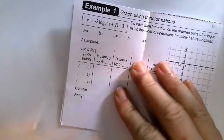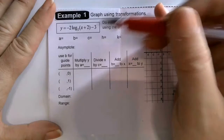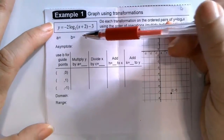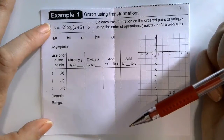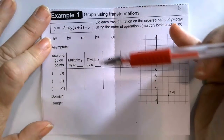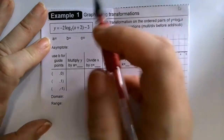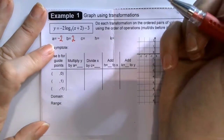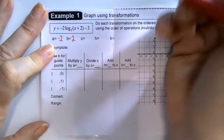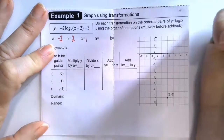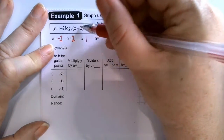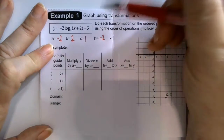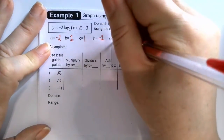In example 1, we're going to graph y equals negative 2 log base 2 of the quantity (x plus 2) minus 3. Since this is base 2, we can't use the graphing calculator. Identifying the parameters: a is negative 2, b (the base) is positive 2, c is 1 (no coefficient on x), h is negative 2 (because x minus negative 2 equals x plus 2, so we shift left), and k is negative 3.